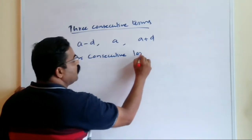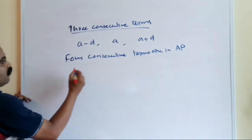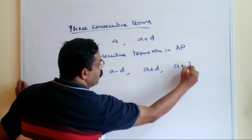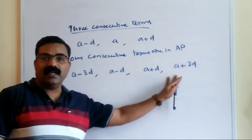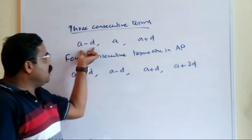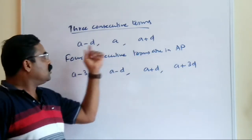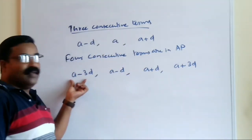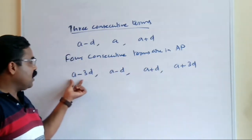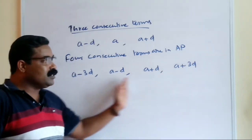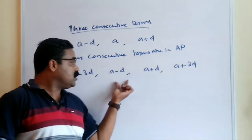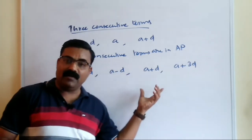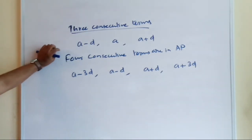For four consecutive terms in AP, we take (a−3d), (a−d), (a+d), and (a+3d). When you add all these, the −3d and +3d cancel, and −d and +d cancel, leaving only terms with 'a'. This makes it easy to find the value of 'a', and once you have 'a', you can find 'd' as well.